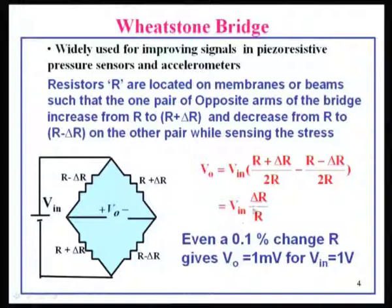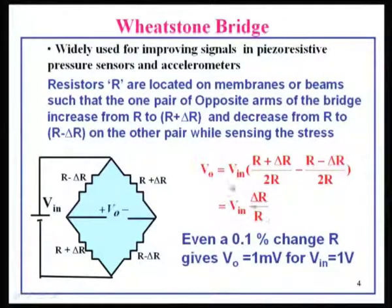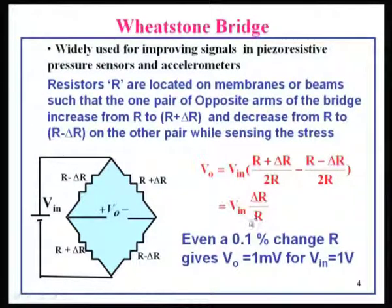You can see that if ΔR changes by 1% — that is R is 1 kΩ and ΔR is 1 Ω, this is 1/1000 = 10⁻³ — so if input is 1 volt, output is 1 mV. If you have 10 volts input it will be 10 mV output. That is a measurable quantity, and that is the benefit of using a resistance bridge.